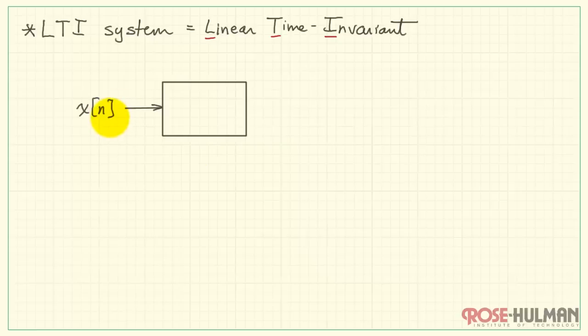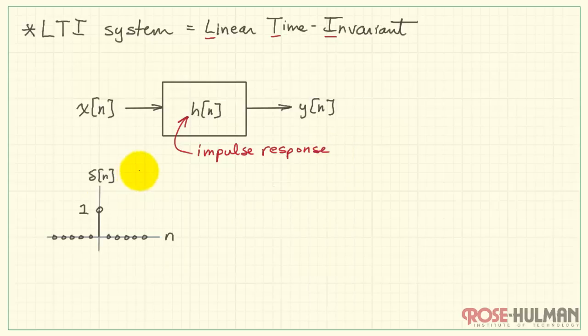The system has an input x of n, an output y of n, and all of the system behavior is captured in its impulse response h of n. Now the impulse response is the system's response to a specific input called an impulse function, denoted as delta of n. It's zero for all values except for n equals zero, at which time it's a unit value.